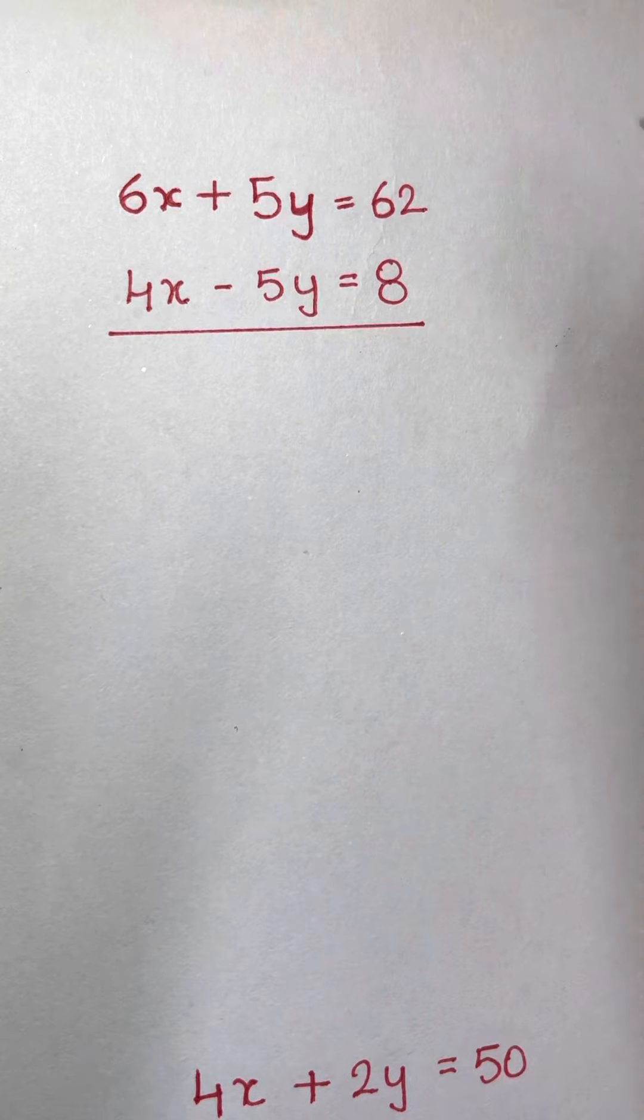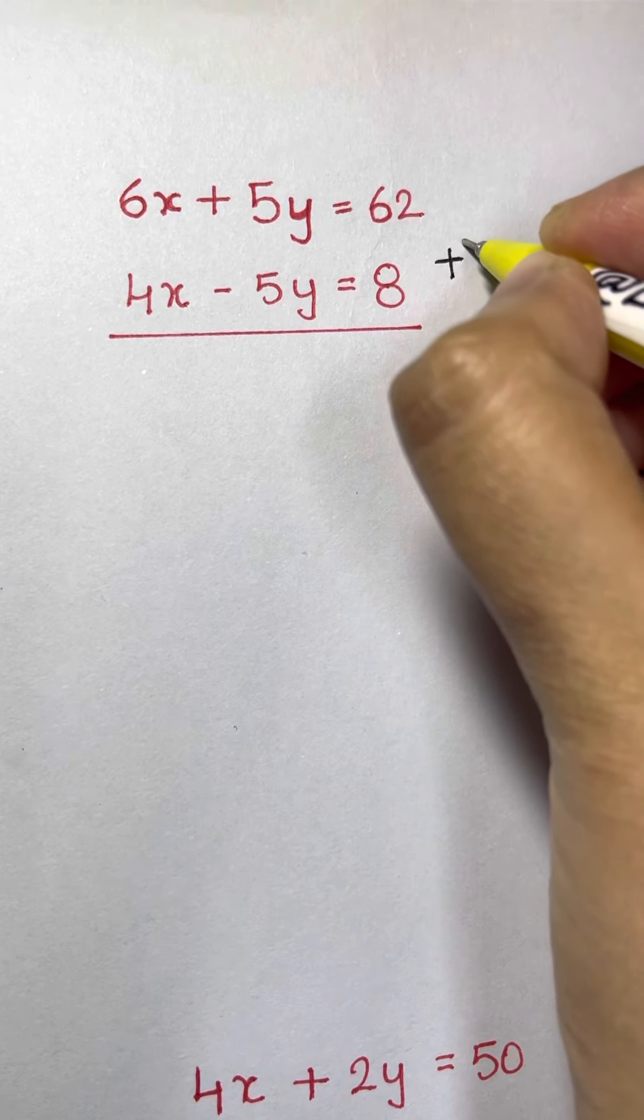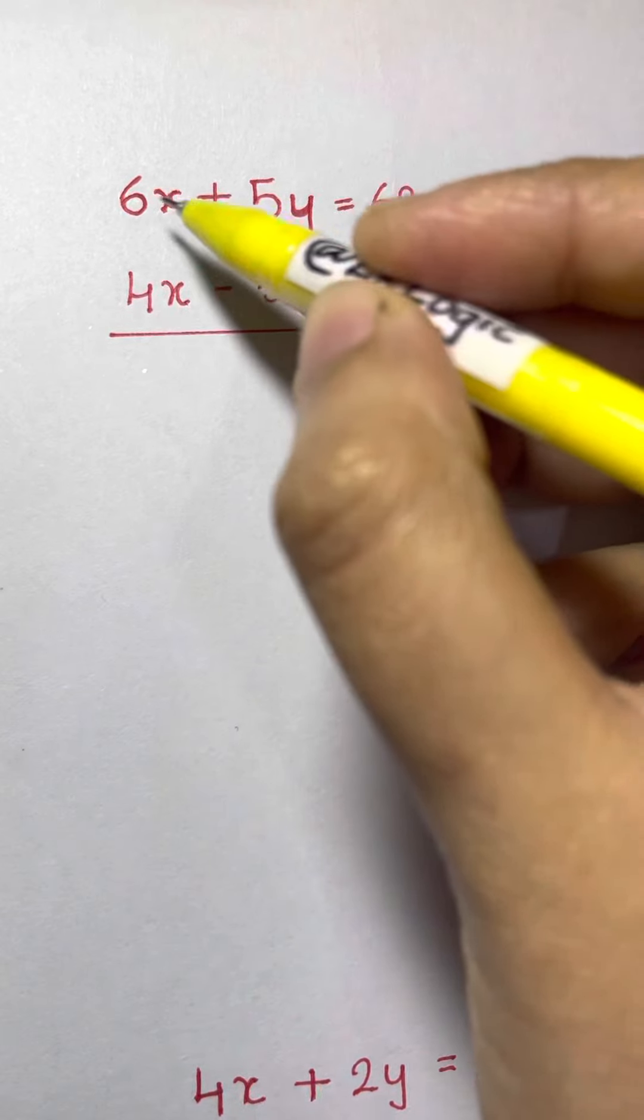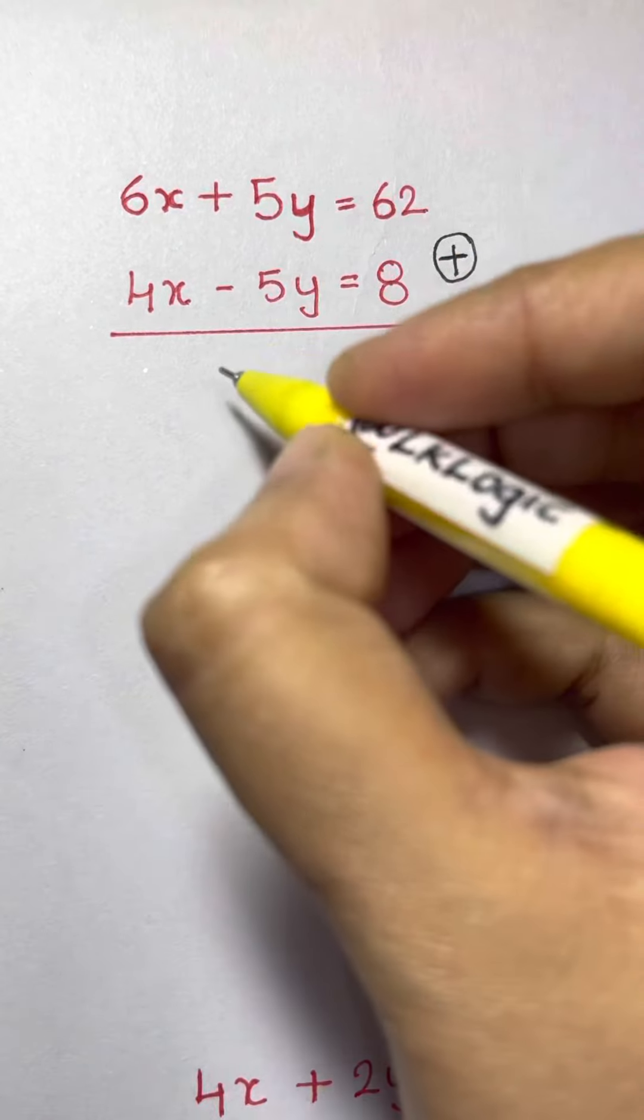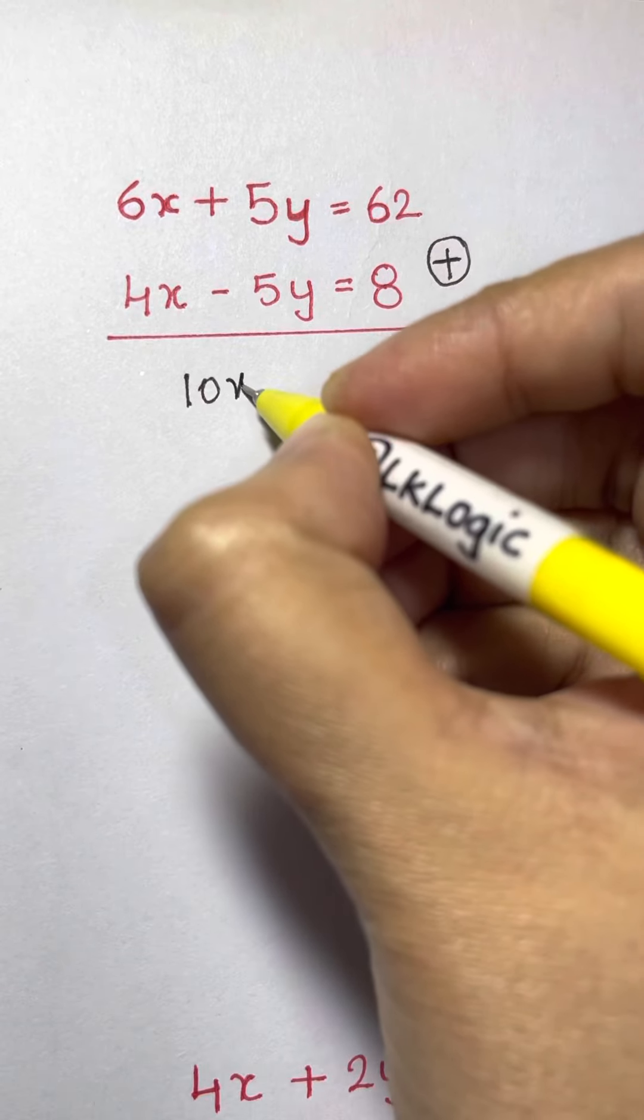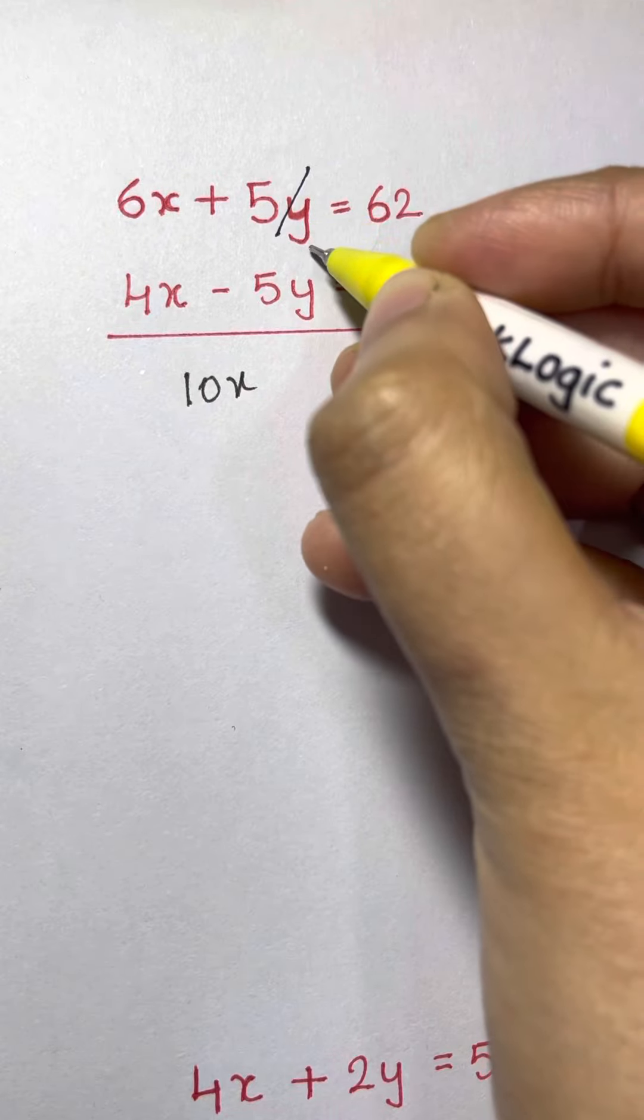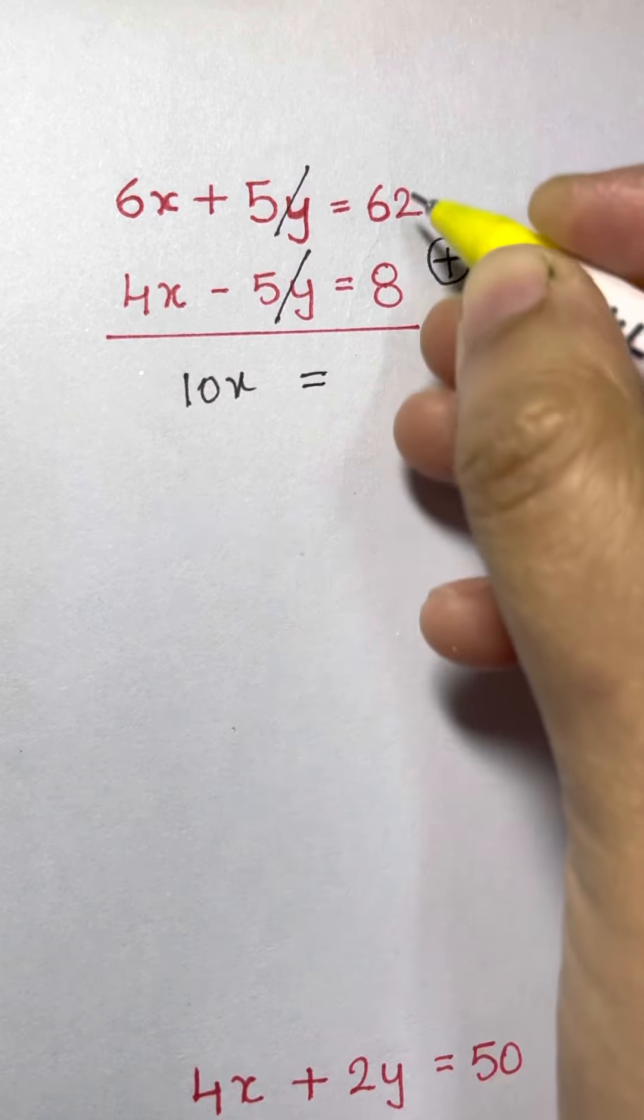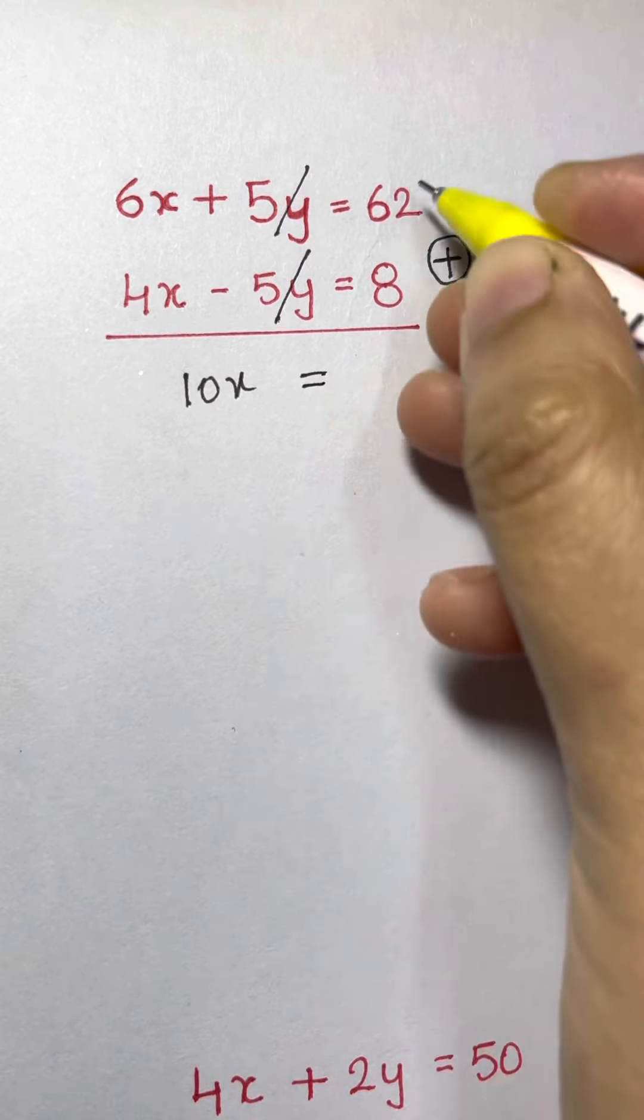So we are going to add these two equations to eliminate y. So here we have 6x plus 4x, that will give you 10x and plus 5y minus 5y gets cancelled, that's equal to 0. So we have equals to 62 plus 8, that gives 70.